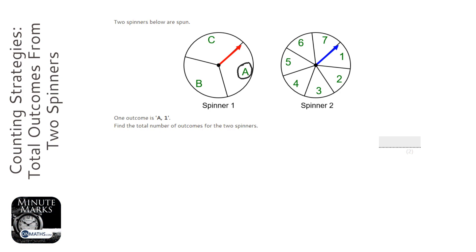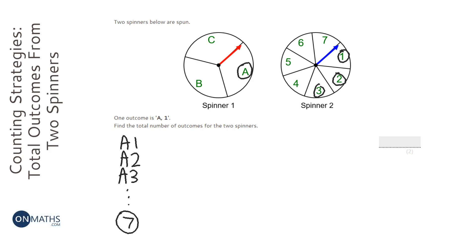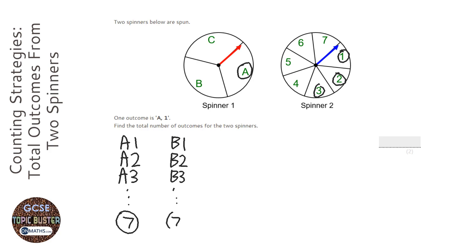So I'm going to start with A and a 1, then stick with A and go for 2 — A2, and then A3. You can quickly see that there's going to be seven of those, so seven outcomes with A. And I do the same with B, and again you can see that there's going to be seven outcomes with B.